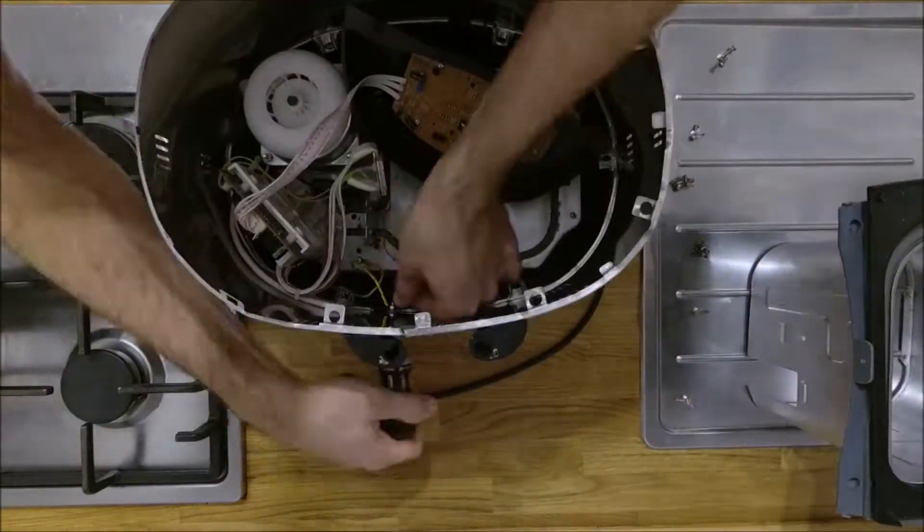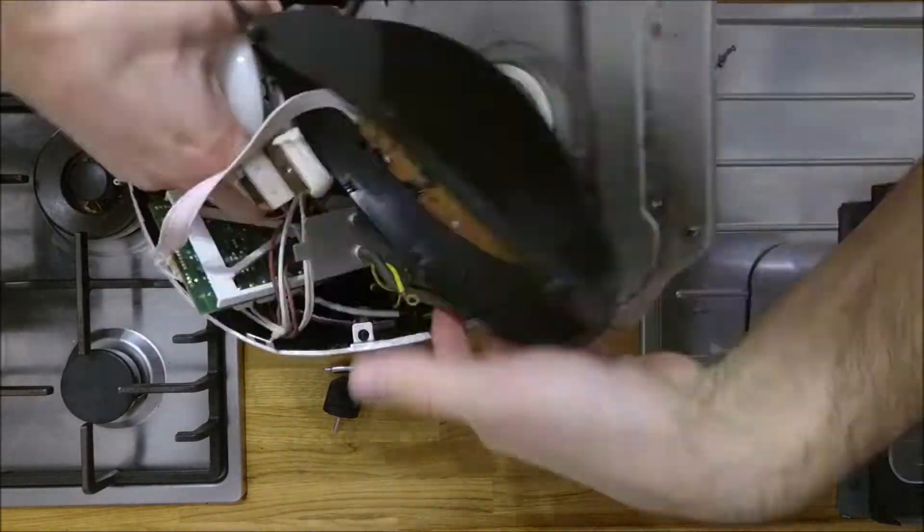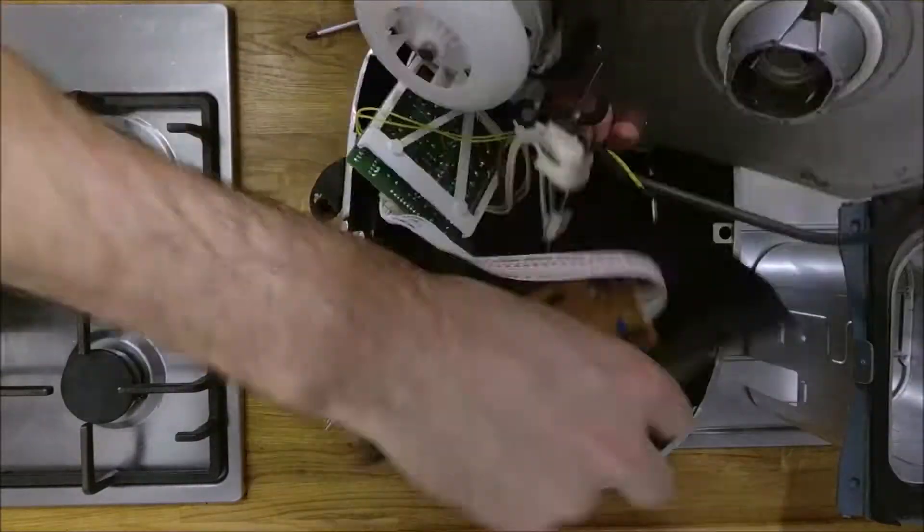Once the base is disconnected, you can unscrew the ground wire from the enclosure. Just make sure you reattach it at the end.